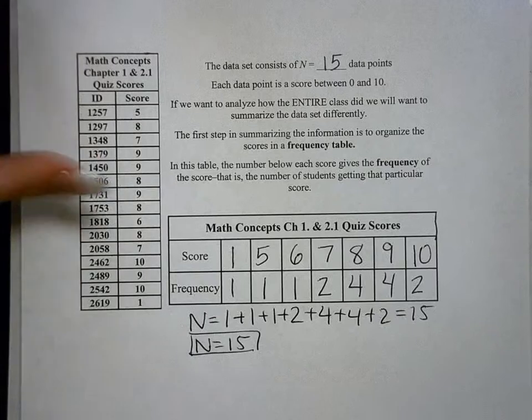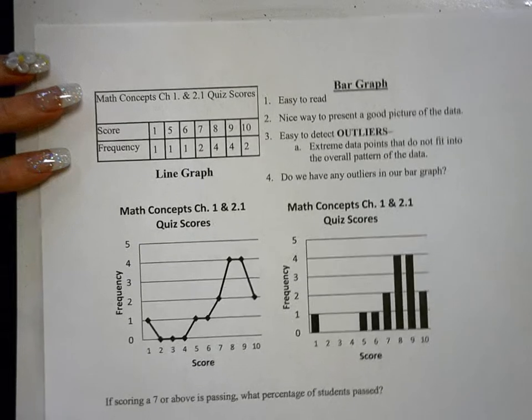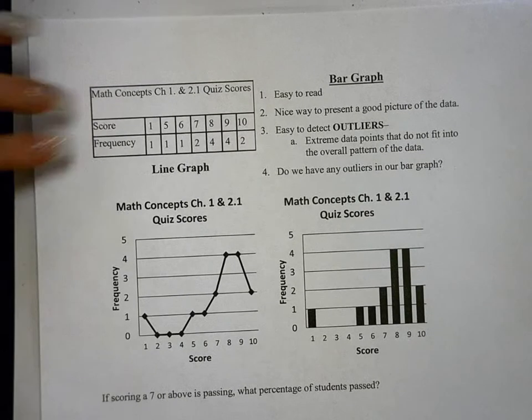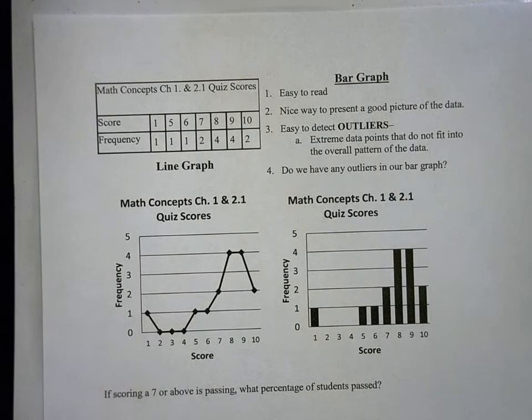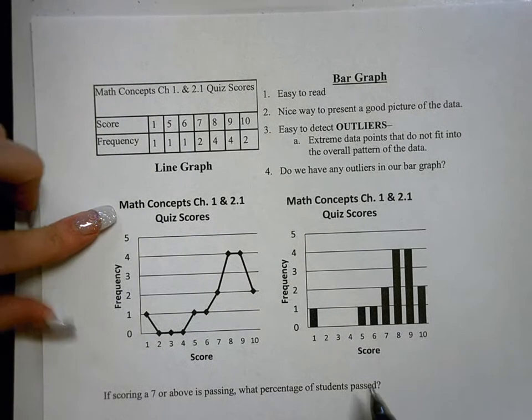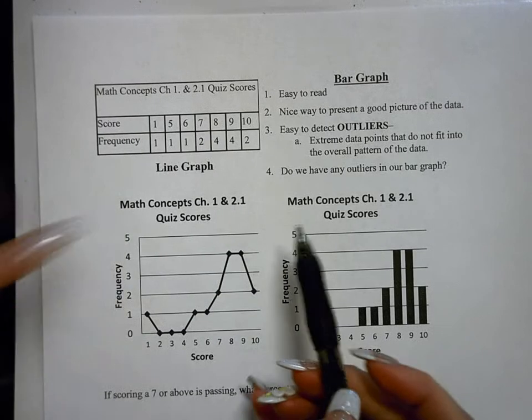Now once you have a frequency table made, there's a variety of things you can do. Here is the frequency table we just found all typed up. And you can make a line graph. So here is a line graph of the math concepts chapter 1 and 2.1 quiz scores. So you need to have a title.